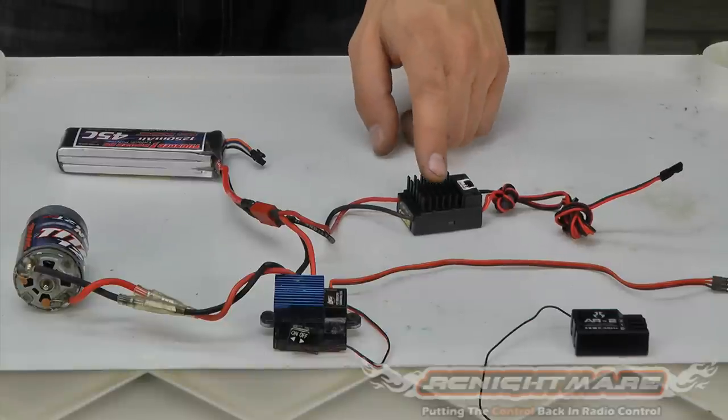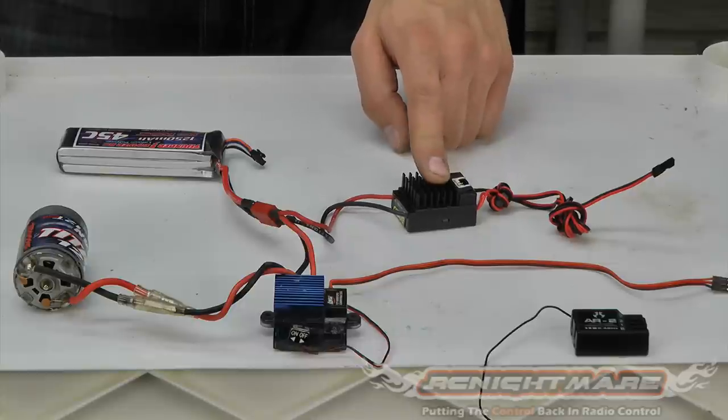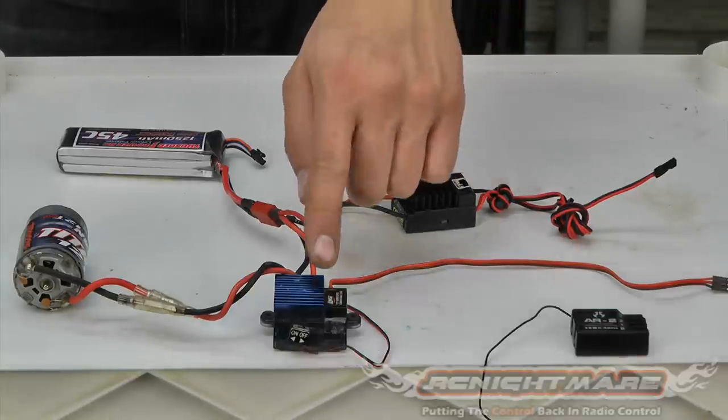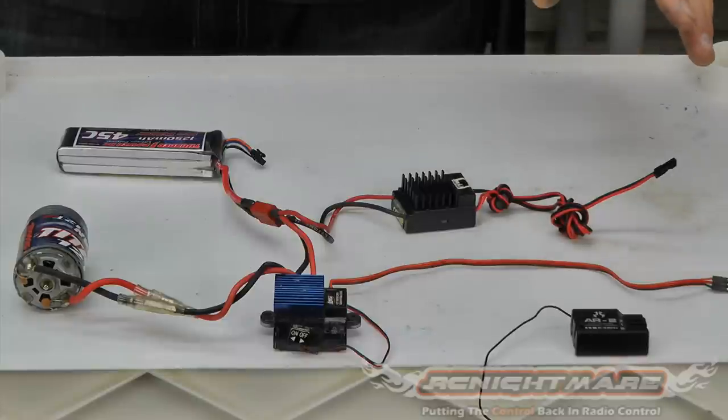For this setup, I have the Cast Creations BEC Pro. Most of you probably use the BEC. Not many people need the Pro. I'm using this on a different project, so I just happen to have it. I have a low C speed controller and motor setup and a 2.4 gigahertz receiver just to show you how it's all done.